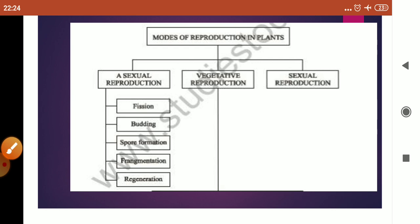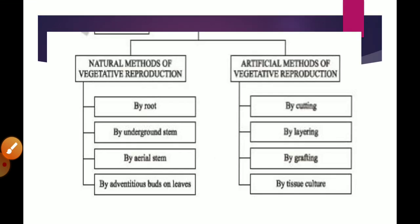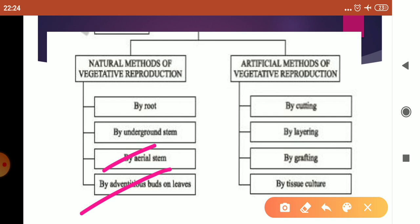Vegetative reproduction also involves only one organism — the vegetative parts of the plant such as leaf, root, or stem. When these parts are involved in increasing the number of the plant, this is called vegetative reproduction. Vegetative reproduction can be performed naturally or artificially. Natural methods include reproduction by root, by underground stem, by aerial stem, and by adventitious buds on leaves. Artificial methods include cutting, layering, grafting, and tissue culture. I will explain each method in detail.